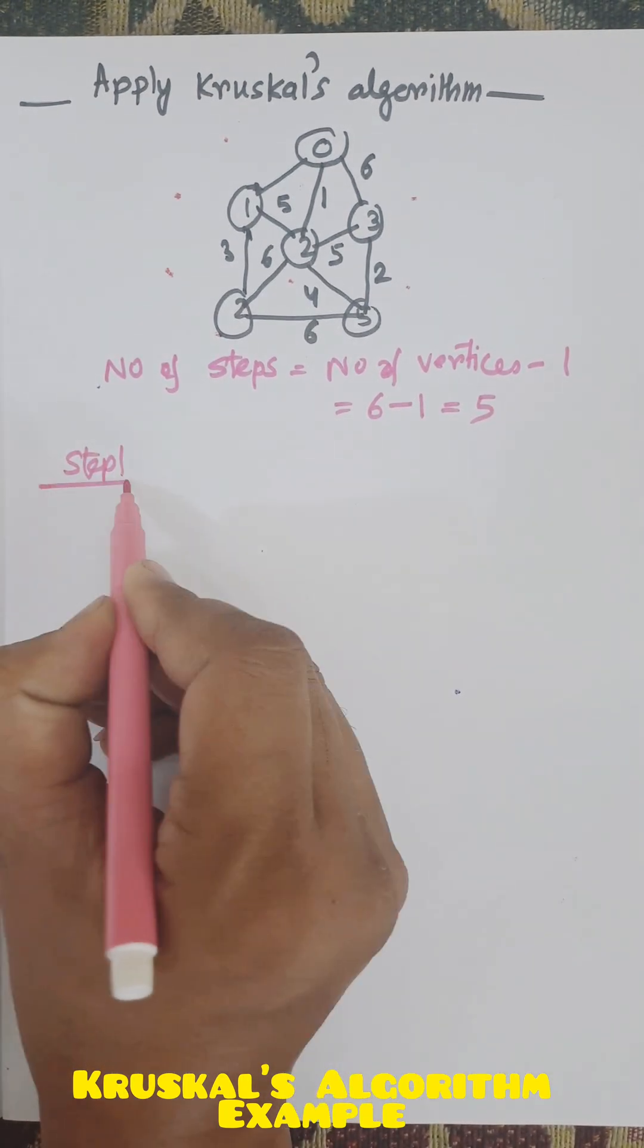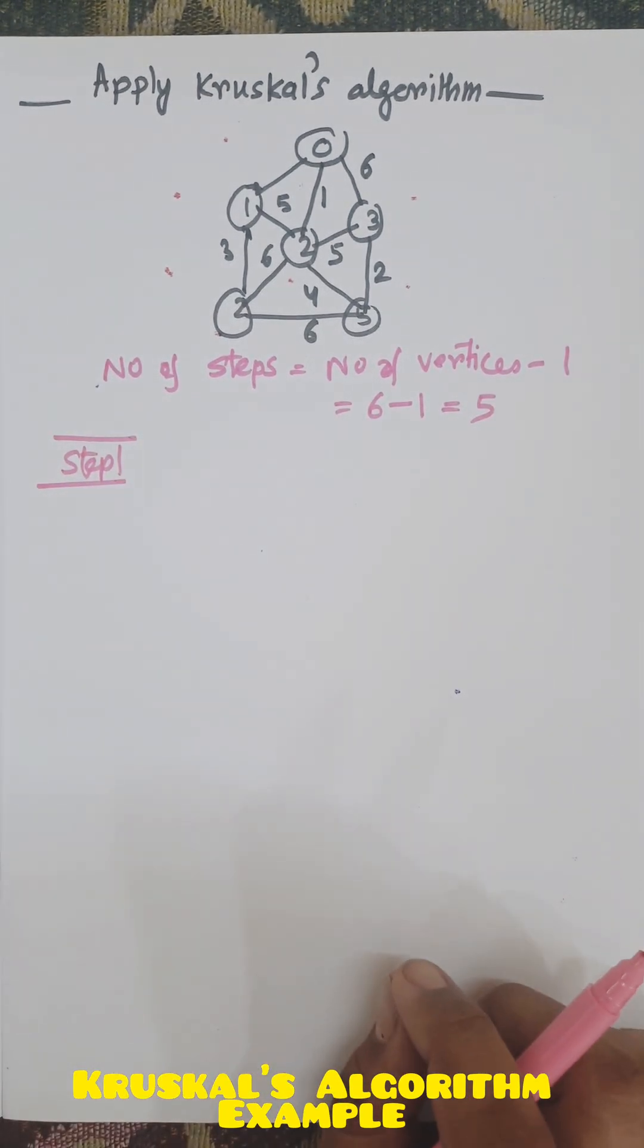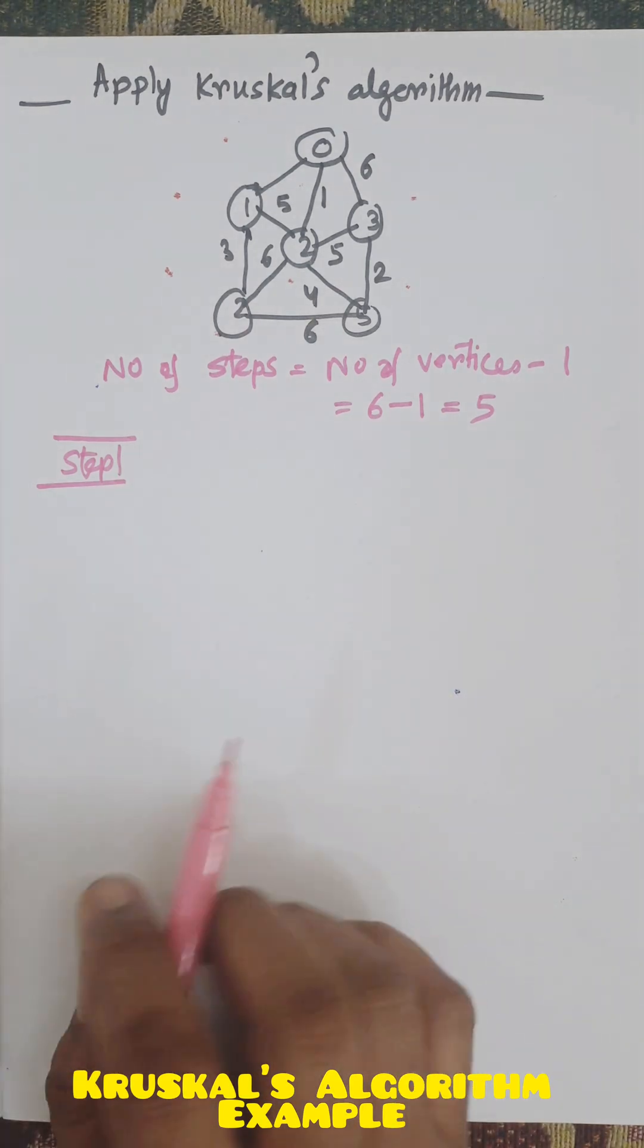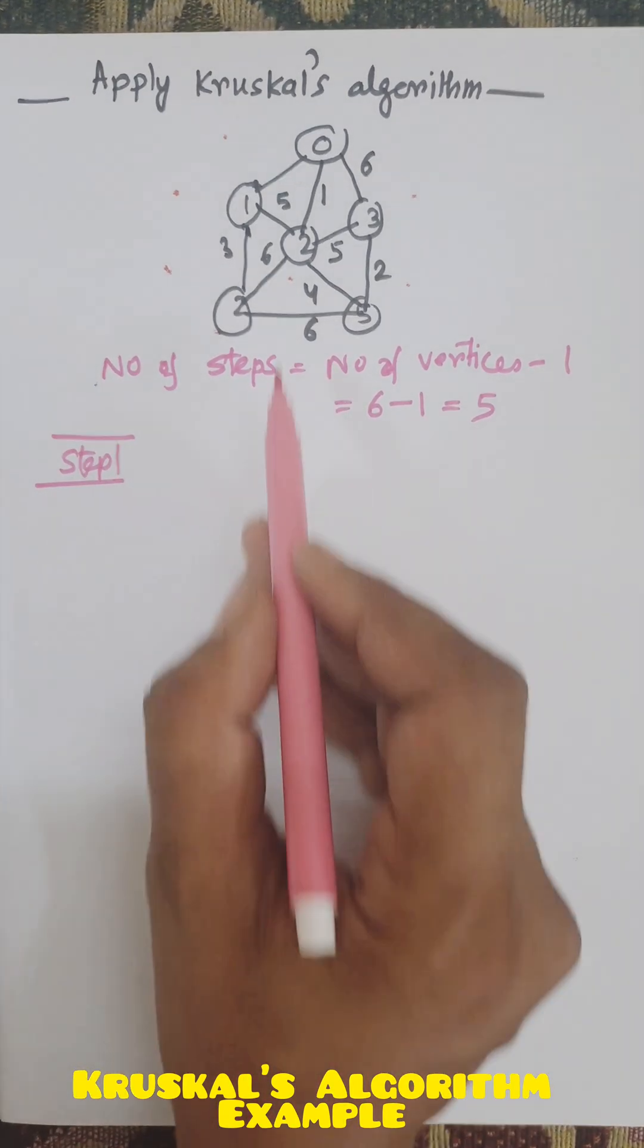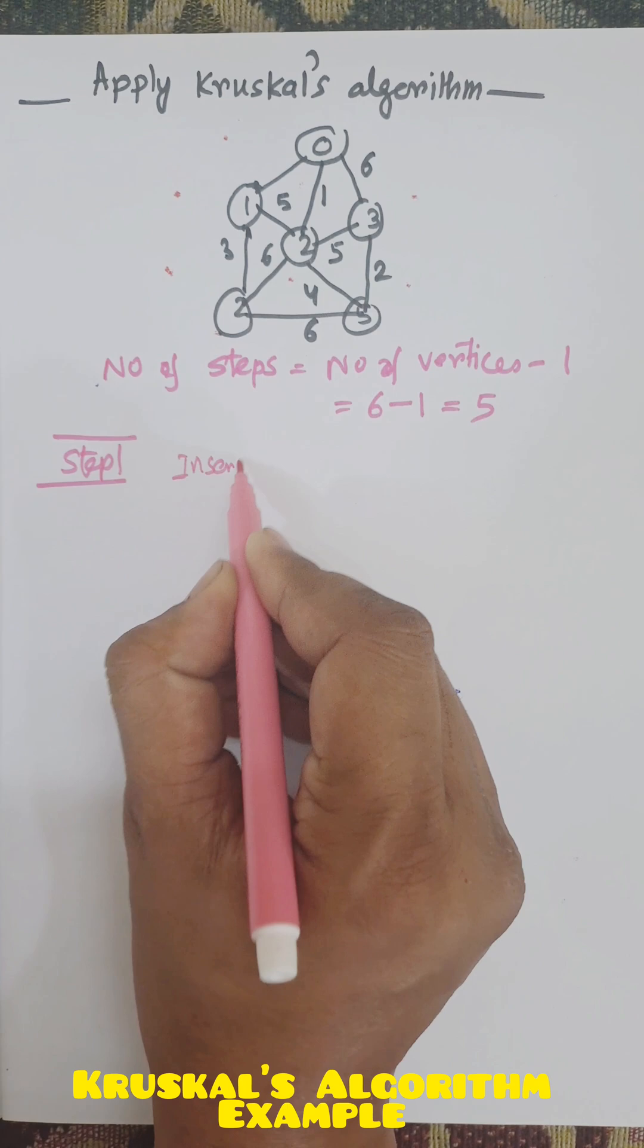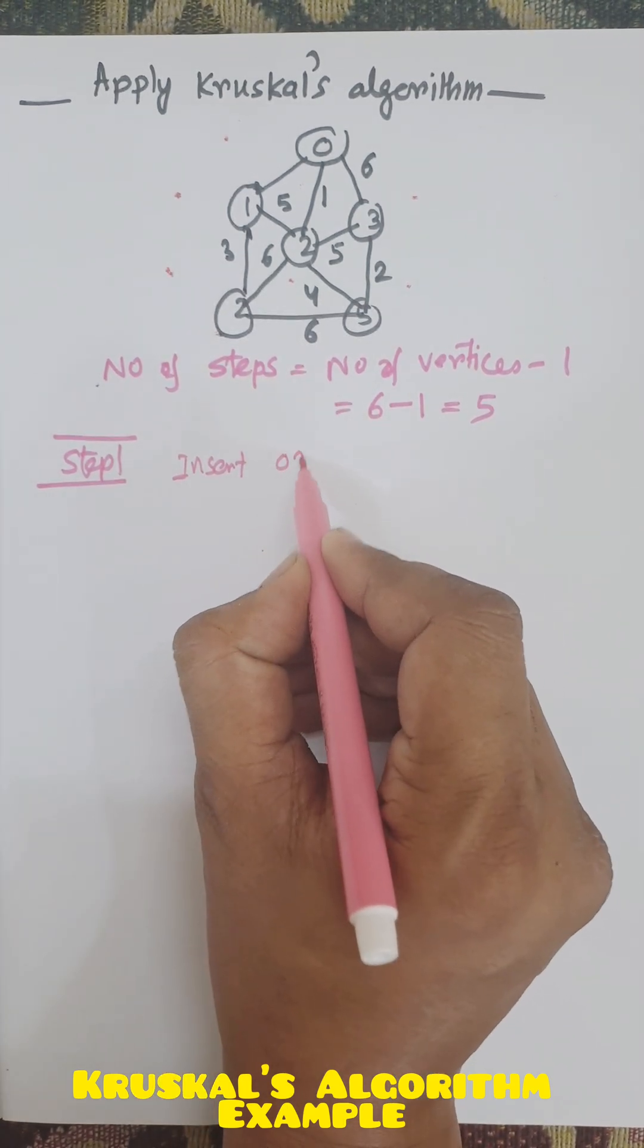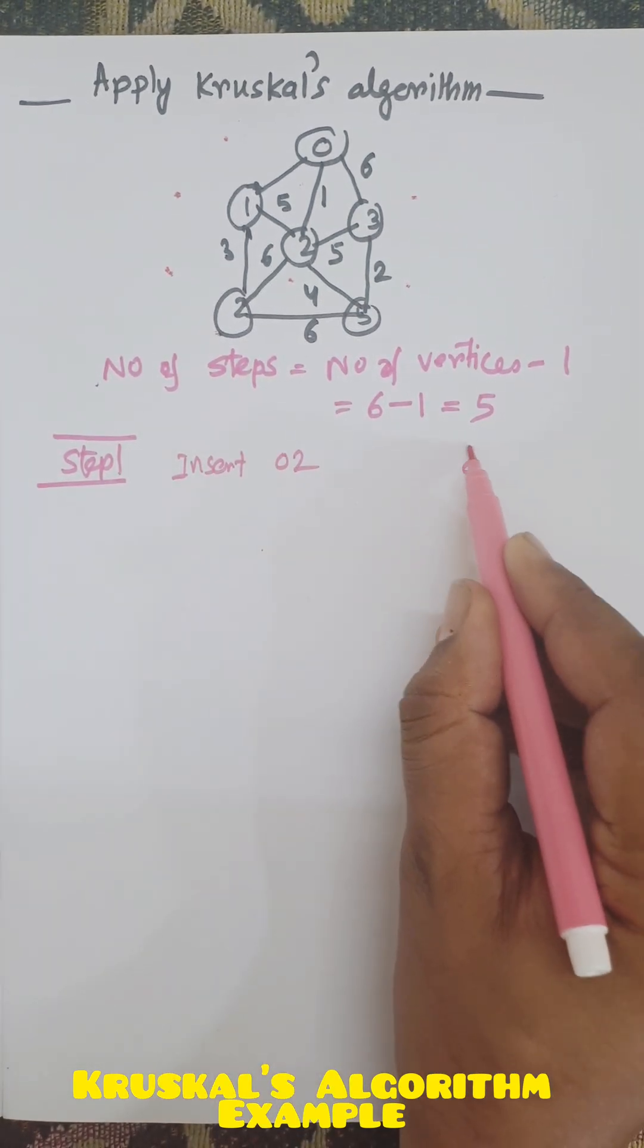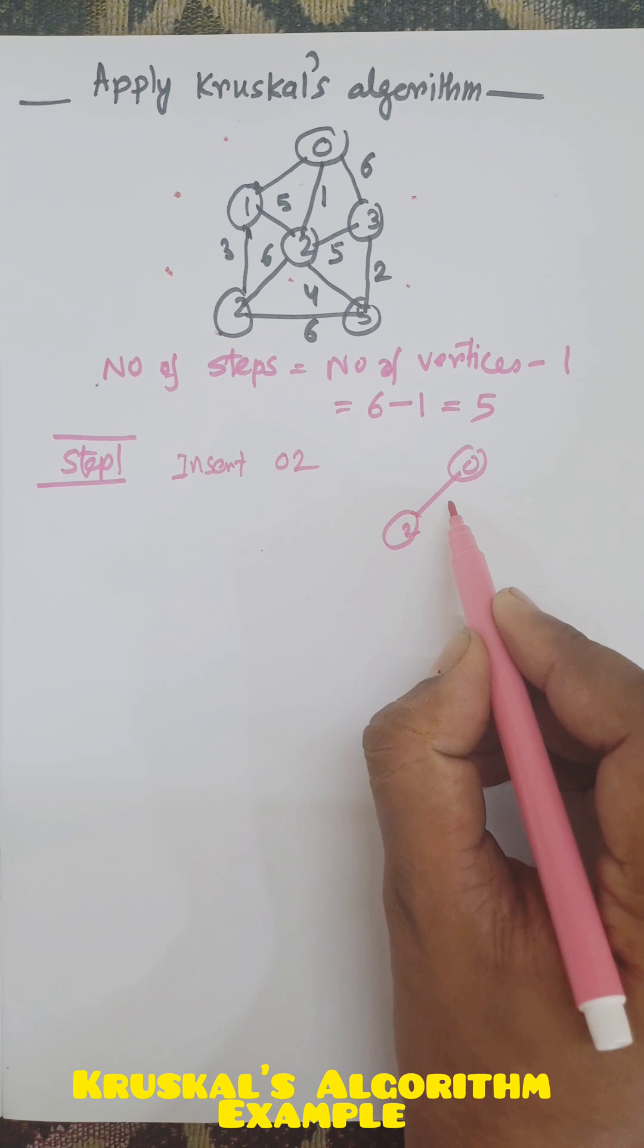Step 1, we need to select the minimum cost from all the edges of the graph. The minimum cost is 1. So insert edge 0-2. That's vertex 0 and vertex 2, and the cost is 1.